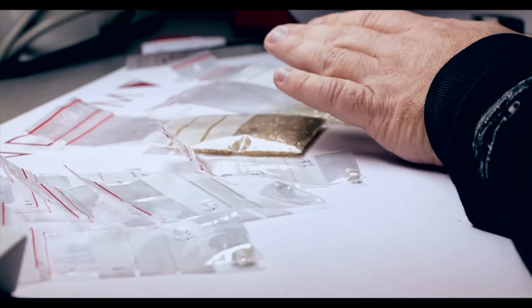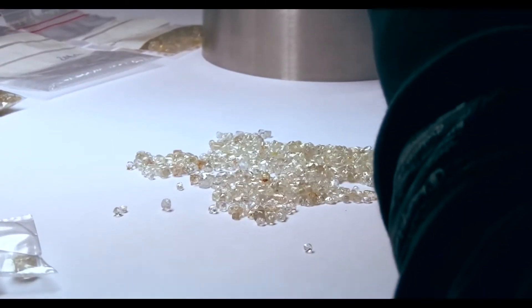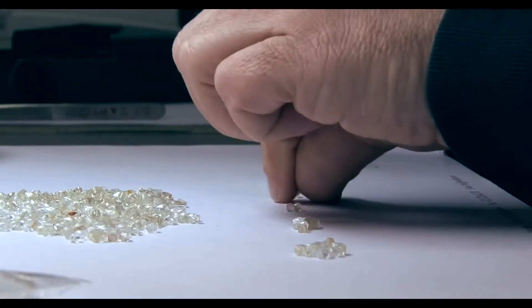You are sorting the stones according to the size of the stone and then the shape and the clarity and the color of the stones. These are the main criteria when the diamonds are being sorted.